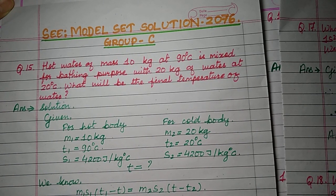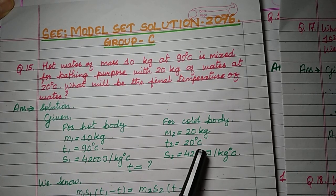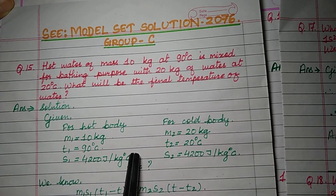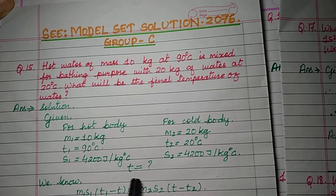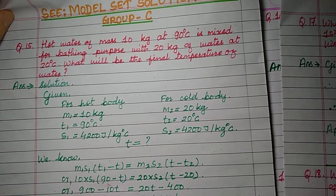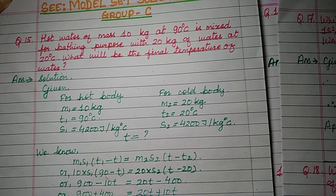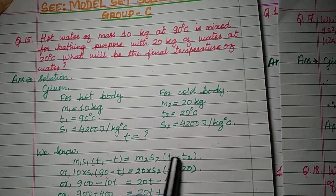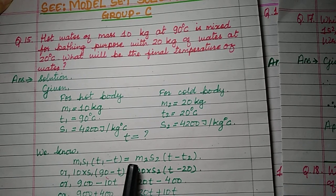You have to find the final temperature, which will be in between the temperature of the hot body and the temperature of the cold body. So you have to find T, the final middle temperature. The principle of calorimetry formula is: heat loss equals heat gain, so m1 s1 (t1 - t) = m2 s2 (t - t2).